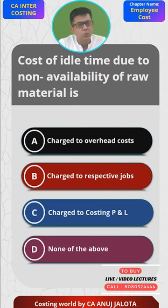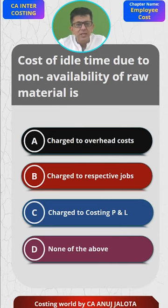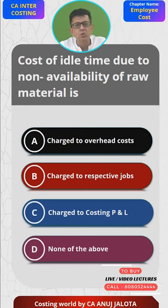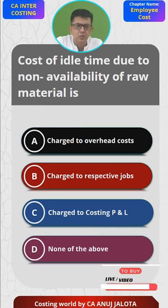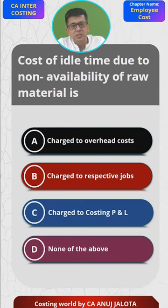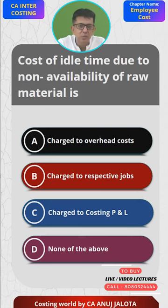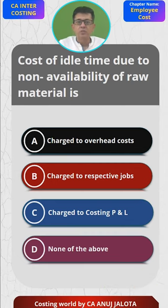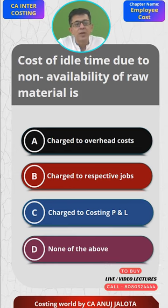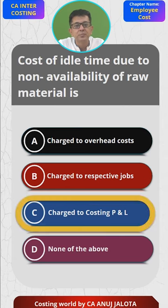The answer here should be — do remember, whenever it is not anybody's mistake, the company has to take that loss on itself. Whatever the company will bear should always be charged to the costing profit and loss account. This is not the worker's mistake, this is not the factory's mistake — there was no material. This is a loss beyond anybody's control, and such losses should always be charged to the costing profit and loss account. So out of A, B, C, and D, the answer should be C. That's the correct answer.